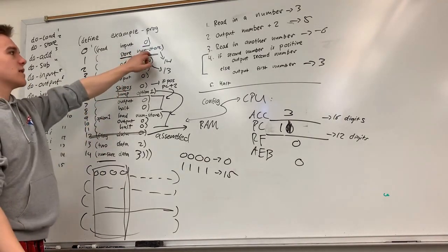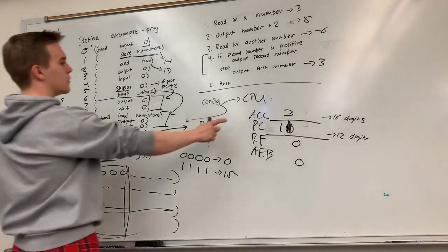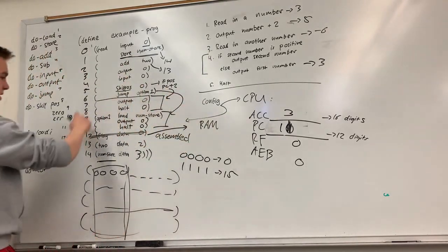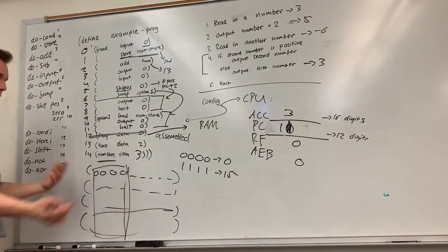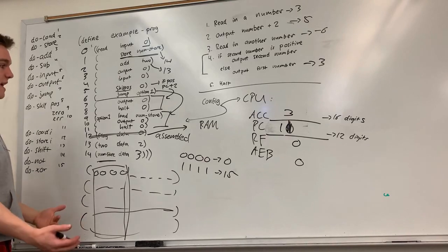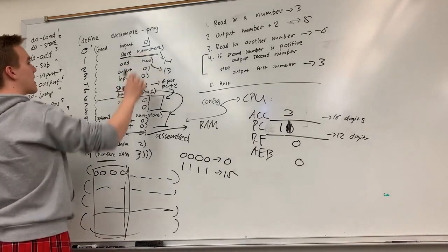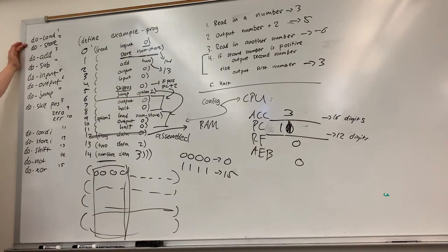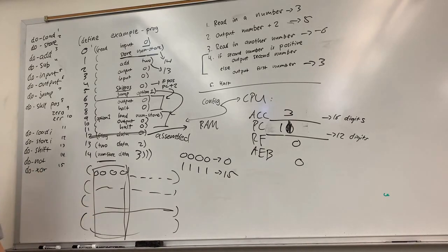Num store will come to be an address. So do store takes an address, takes whatever's in the accumulator at that time, and puts it into that location in RAM. That should make it clear what you need to do for do store — you look at the accumulator and RAM-write it to a specific location indicated by the address you passed. Do load is similar, except you're going to be RAM-reading from a location in RAM and bringing that value up into the accumulator.